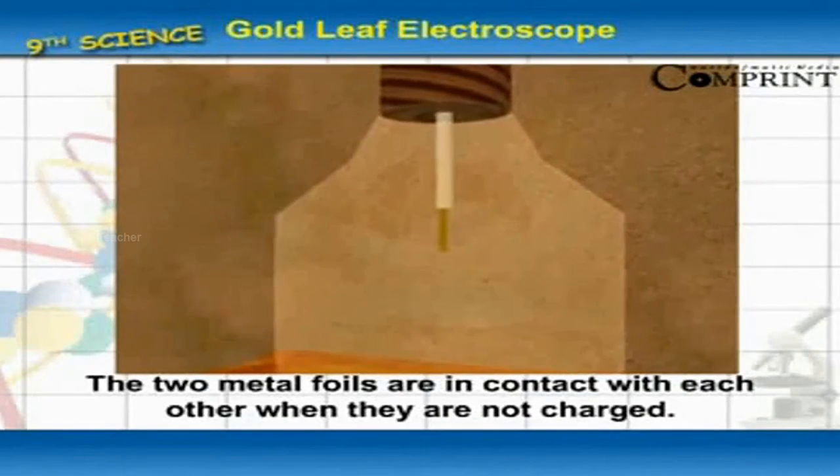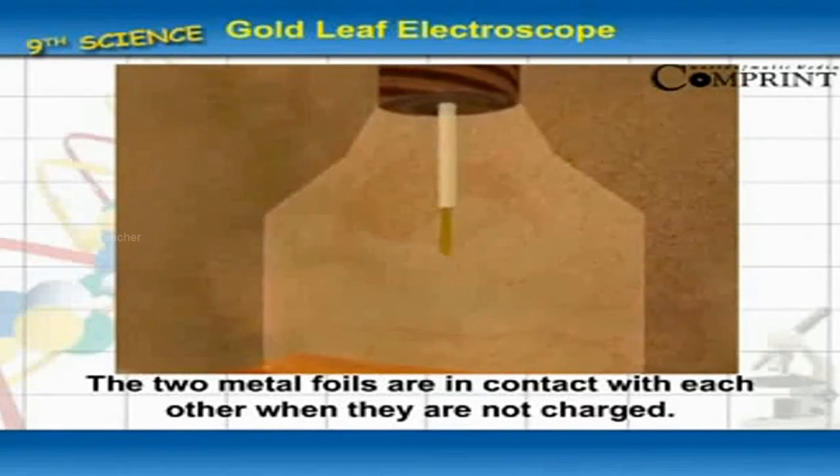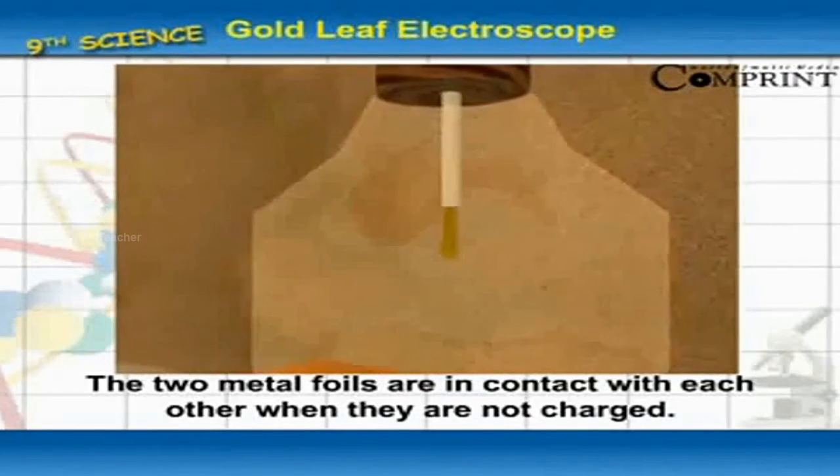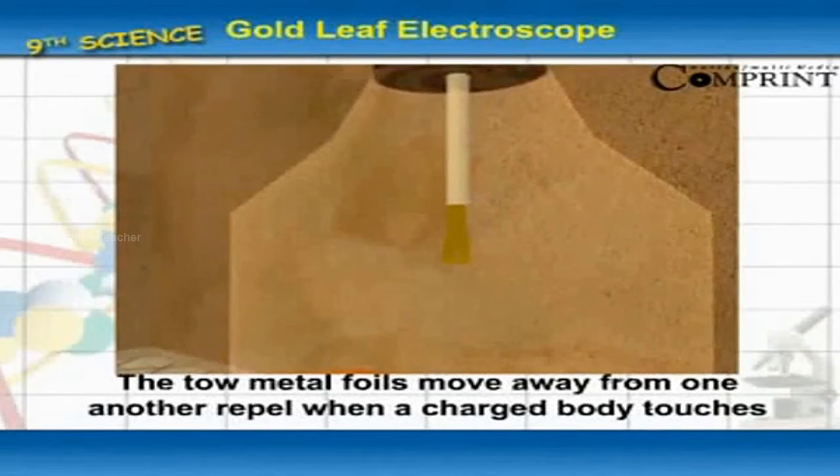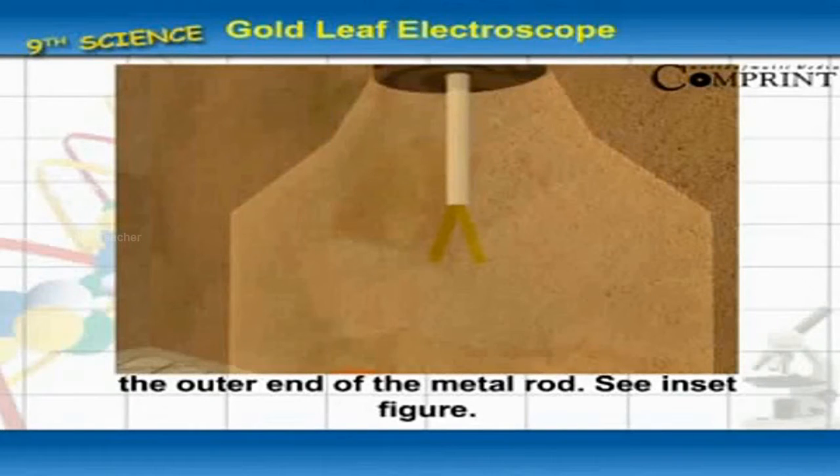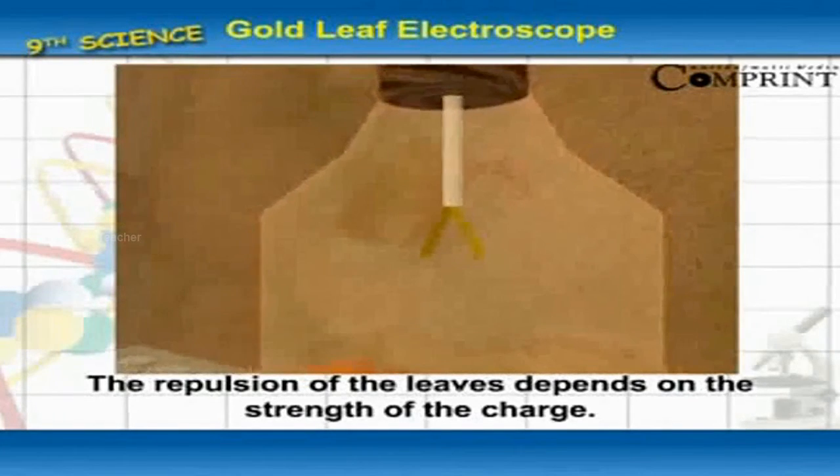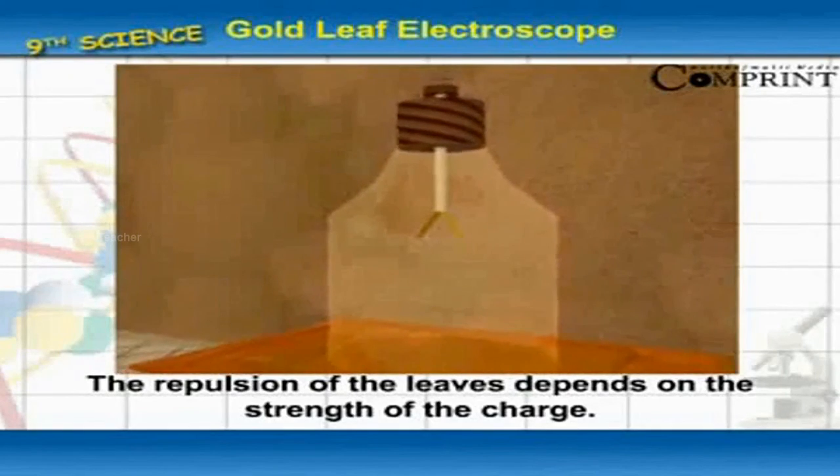Working: The two metal foils are in contact with each other when they are not charged. The two metal foils move away from one another when a charged body touches the outer end of the metal rod. The repulsion of the leaves depends on the strength of the charge.